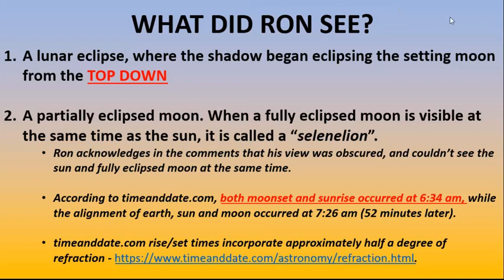According to timeanddate.com, both moon set and sunrise occurred at 6:34 AM, while the three body alignment between earth, sun, and moon in two dimensions occurred at 7:26 AM, which was 52 minutes after the sun rose and the moon set. Timeanddate.com sunrise, sunset, moonrise, moonset times incorporate approximately half a degree of refraction, and you can check that out with the link there.